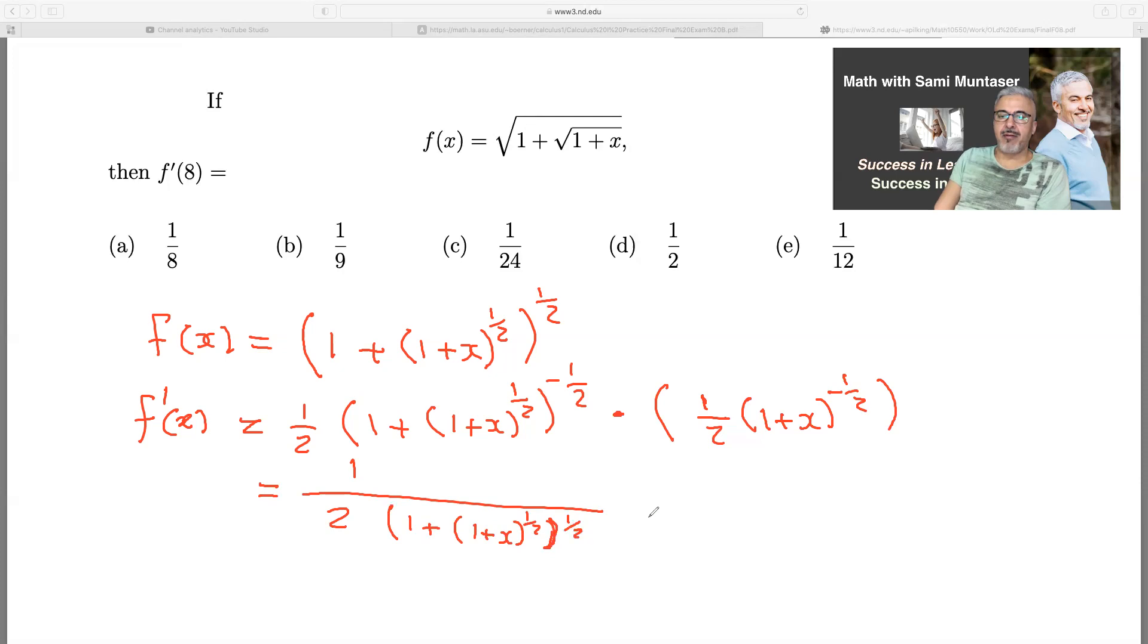To the power of one half times. This also, I'm gonna bring the one plus x to the negative half down where the two is, and then it becomes positive one half. And at this stage, what I'm gonna do, I'm gonna sub and now do f prime of eight.